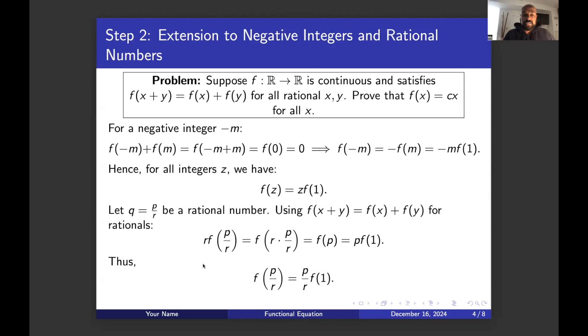But now if we rearrange this, we notice that f of p over r is going to equal p over r times f of one by dividing by r here. So we get the same phenomenon we had for integers happening for rational numbers. If you plug in any rational number q into here, you'll get q times f of one.